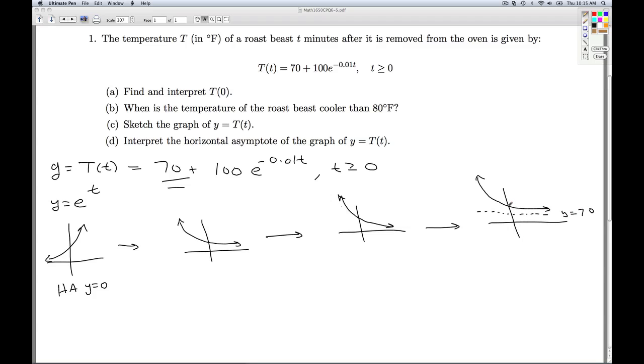We know what the intercept here is, because when I plug 0 into the function, I get out 170. And since I'm restricted to t being strictly bigger than 0, I can erase this part of it.